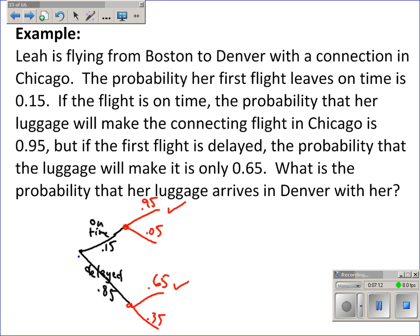Okay. So, on time times the luggage making it would be 0.15 times 0.95, and we get 0.1425. And then it being delayed, but her luggage still makes it, would be 0.85 times 0.65, and we get 0.5525. Okay. We're looking at an or situation where this or that happens. I add them together, and I get 0.695. So, about 70% of the time, the luggage will be there when she arrives in Denver.